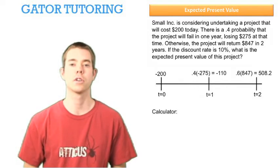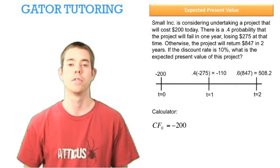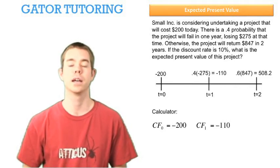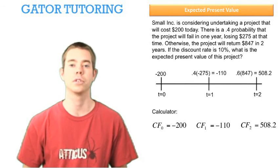We're going to go to our calculator. In time period zero, for cash flow zero, we're going to enter in negative $200. For cash flow one, we're going to enter in negative $110, and for cash flow two, we're going to enter in positive $508.2.